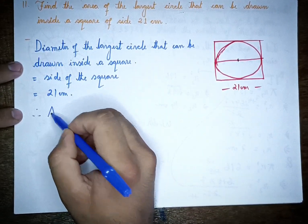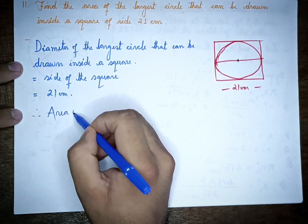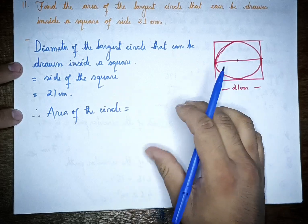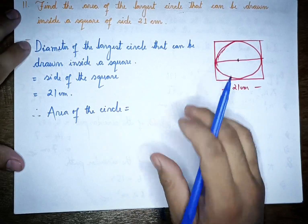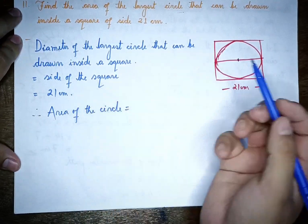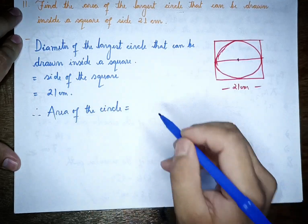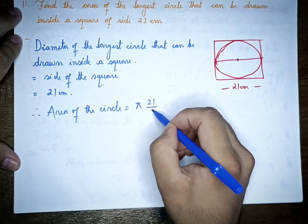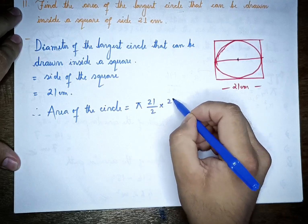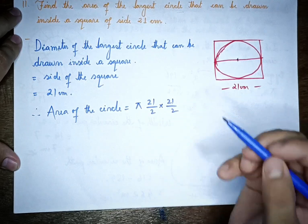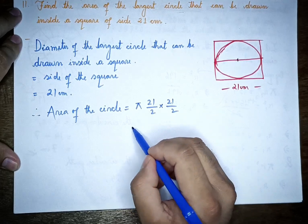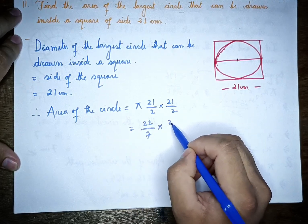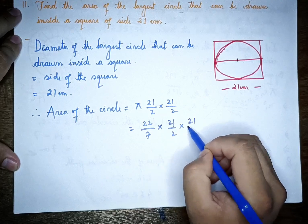The area of the circle is pi r squared. Using pi = 22/7 and radius = 21/2, the area is 22/7 multiplied by 21/2 multiplied by 21/2.